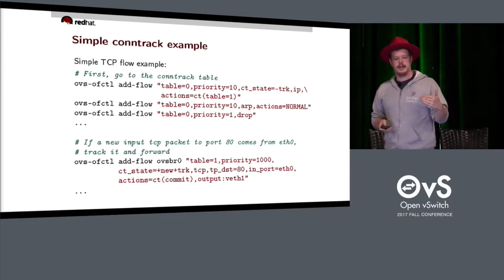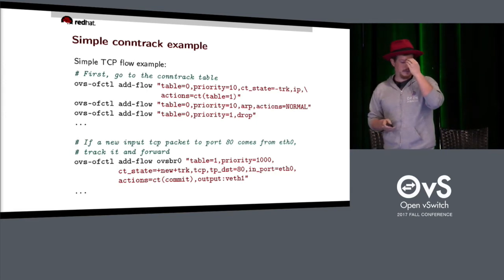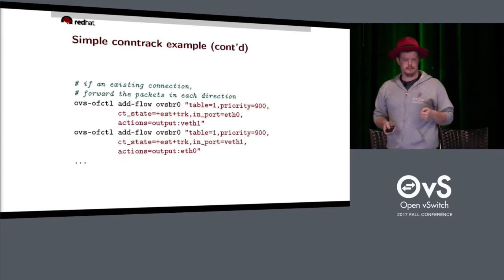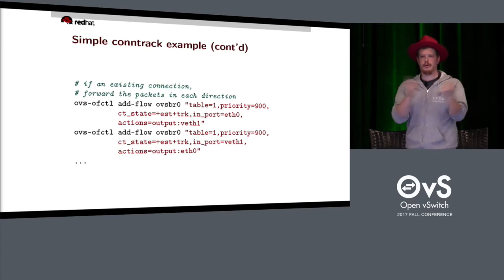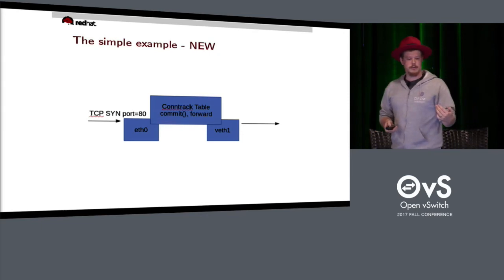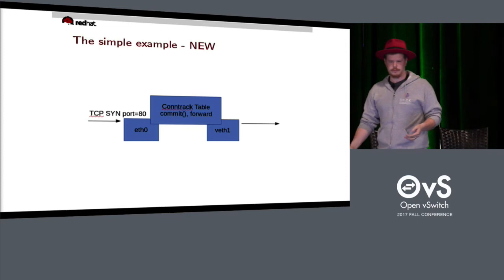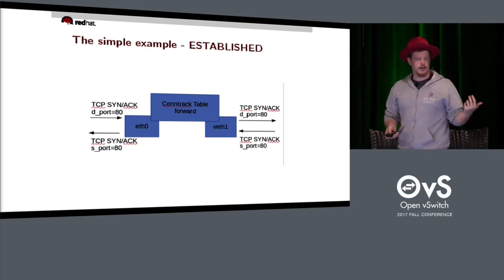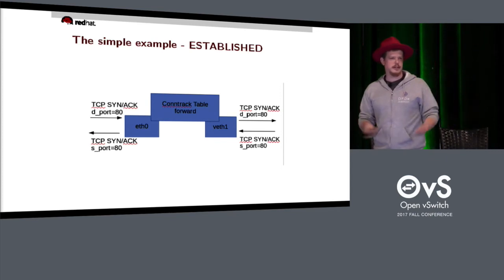On table one: when there's a new connection and its destination port is 80 coming in from ETH0, commit it and push it out VETH1. When it's established, forward them bidirectionally. In the illustration, the SYN packet comes in on ETH0, gets committed to the conntrack table and forwarded through VETH1. For established packets, they visit the conntrack table, refresh the timers, and flow in either direction.